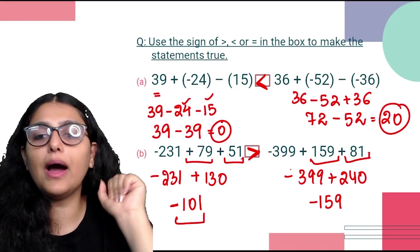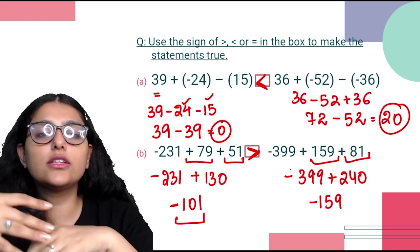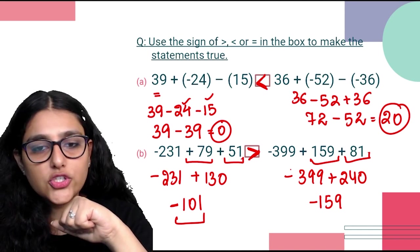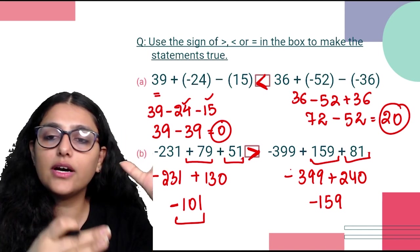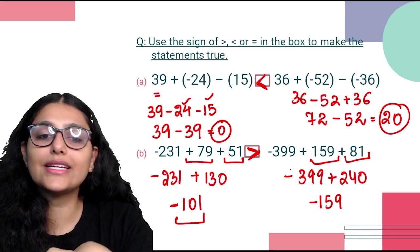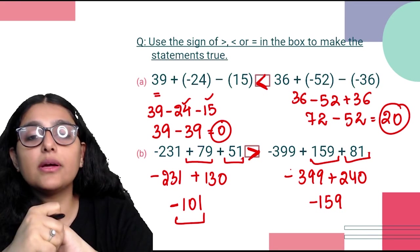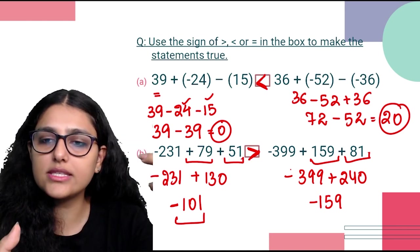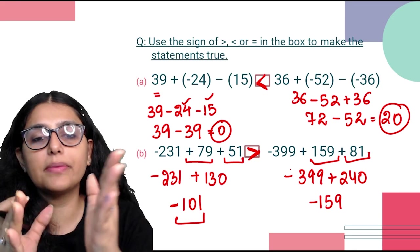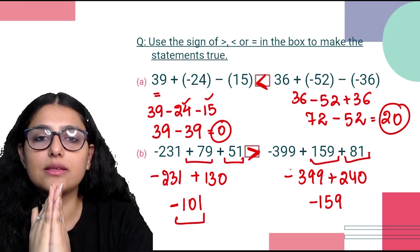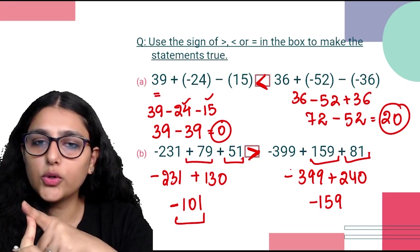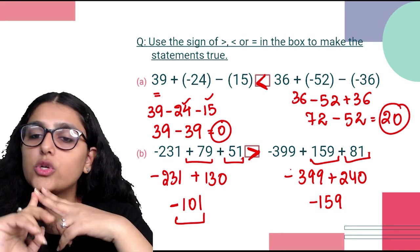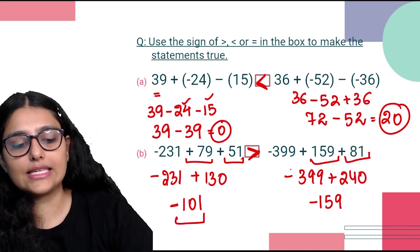This is the first part of Chapter 1 on Integers — a quick recap, introduction, and practice questions. In the next class, we are going to do the very important topic of properties of integers: closure property, commutative property, associative property, and distributive property. Till then, revise as many questions as you can.